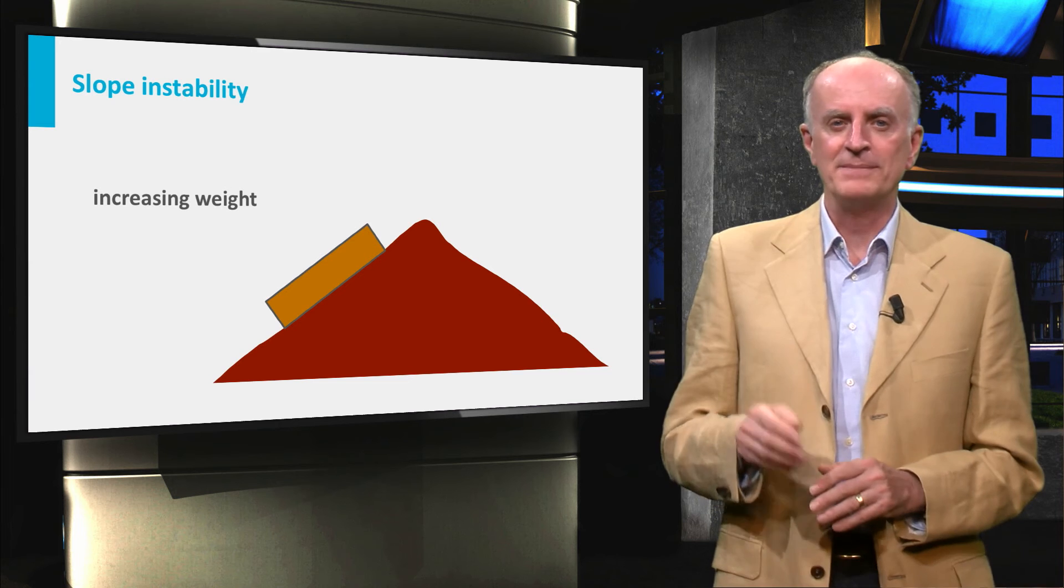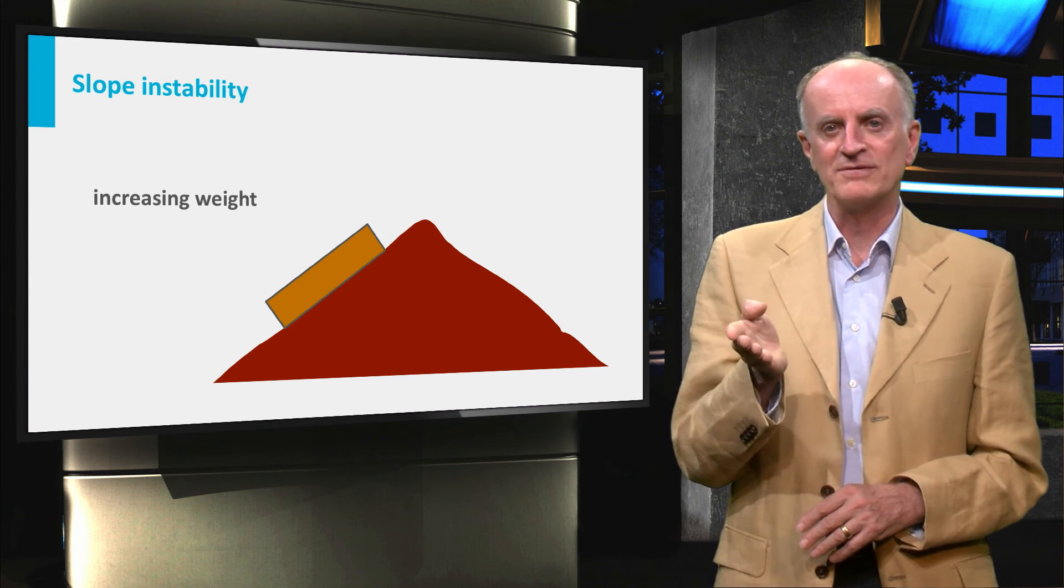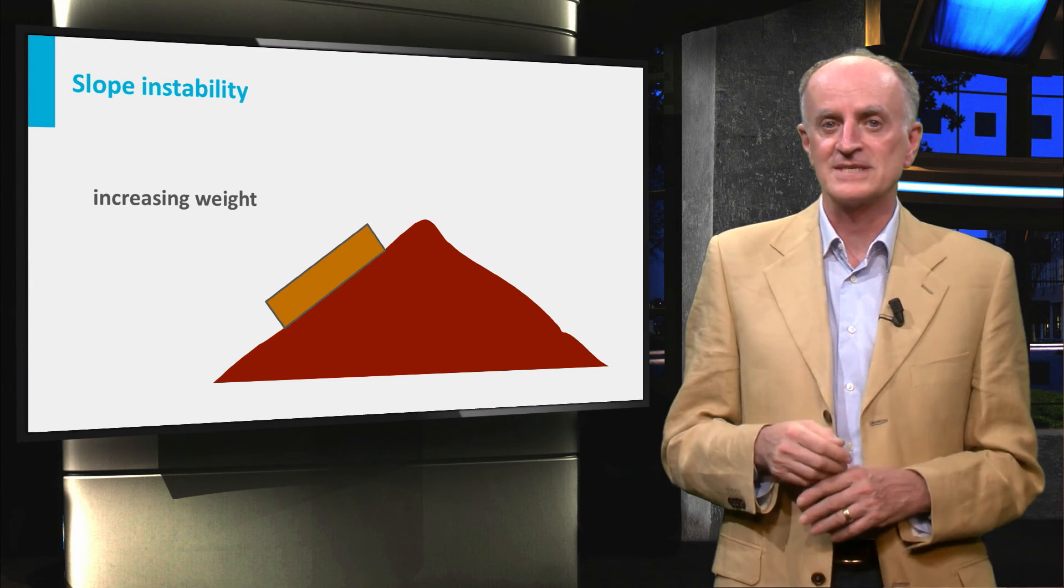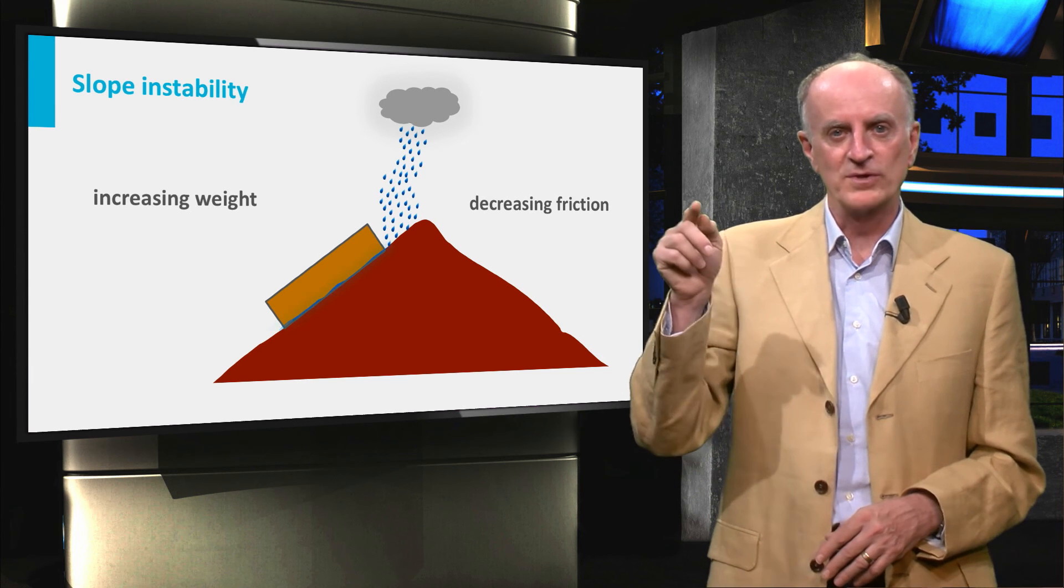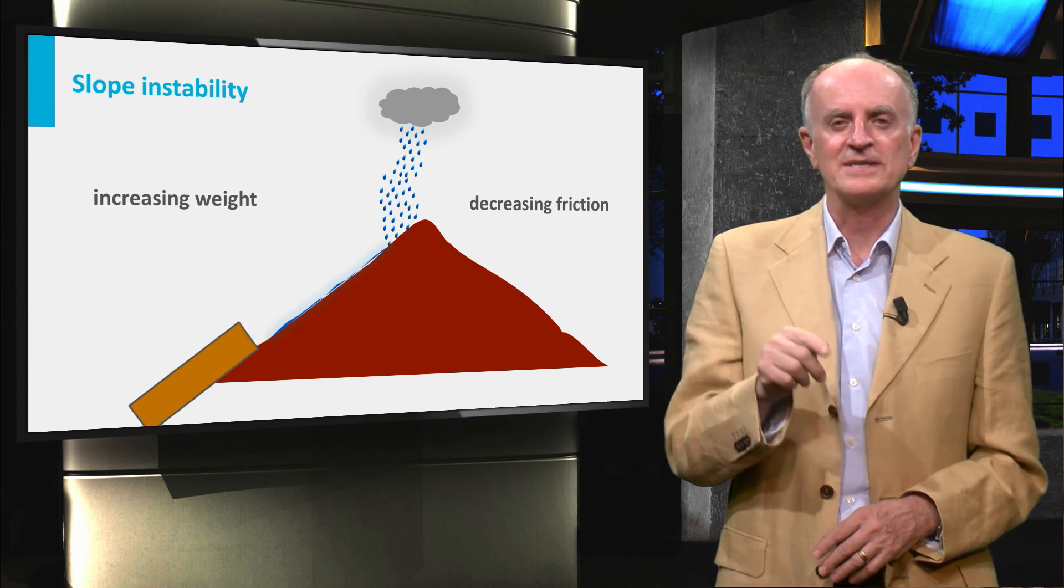Alternatively, a landslide can be triggered by a reduction of the friction coefficient at the base of the rock. This is typically achieved during large precipitations when water infiltrates into the detachment domain.